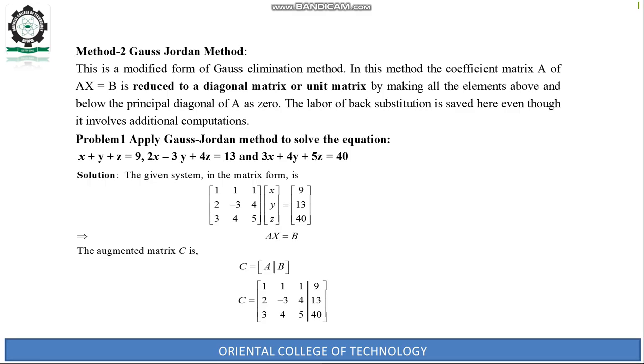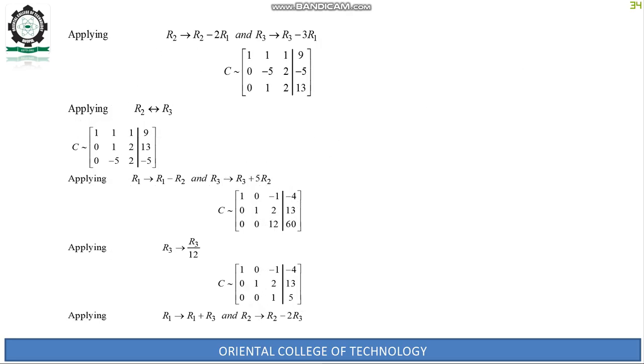Writing the augmented matrix: 1, 1, 1, 9; 2, -3, 4, 13; 3, 4, 5, 40. Apply row operations: R2 → R2 - 2R1 and R3 → R3 - 3R1.